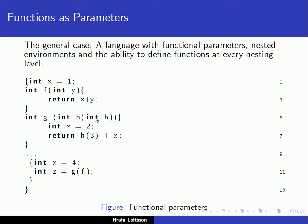That function parameter is called h, and it takes an integer as a formal parameter and returns an int. So the function g takes another function as a parameter; in the header we can see that function h takes an integer as a parameter and returns int. The function g itself also returns an integer. The body of g declares a local variable x, gives it the value 2, and then returns a value by calling its function parameter h with the value 3, and adds x to it.